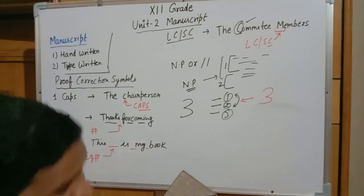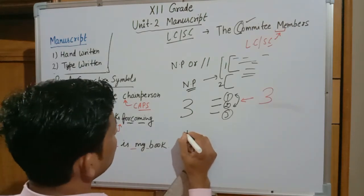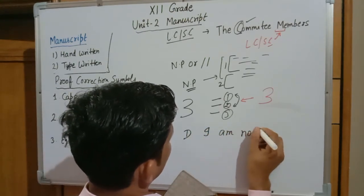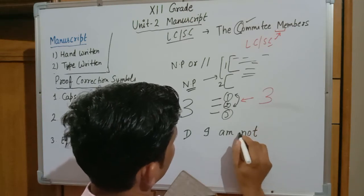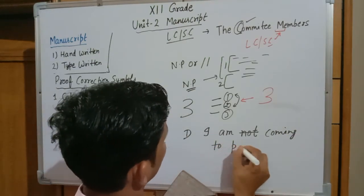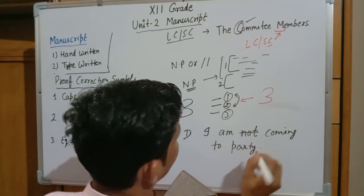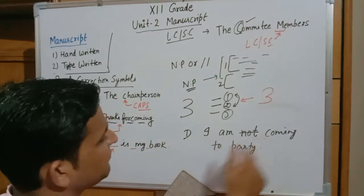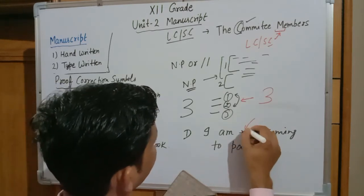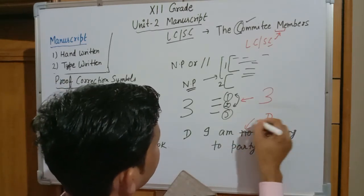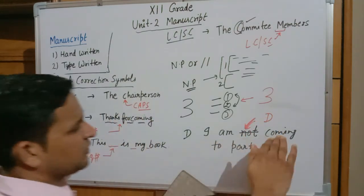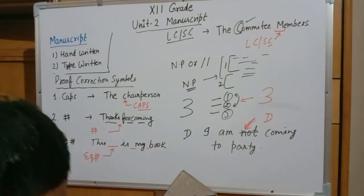The next sign is D, which is used to delete matter. For example, if I write 'I am not coming to party,' the word 'not' makes it negative, but if the intended meaning is 'I am coming to party,' we need to delete 'not.' The D sign marks the word for deletion. The word is already struck through, and the D sign confirms it should be deleted.